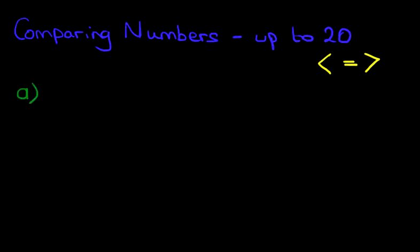Now suppose we have two numbers. We've got 12 and we've got 17. So we've got number 12 and number 17.